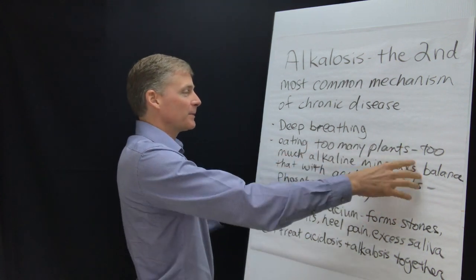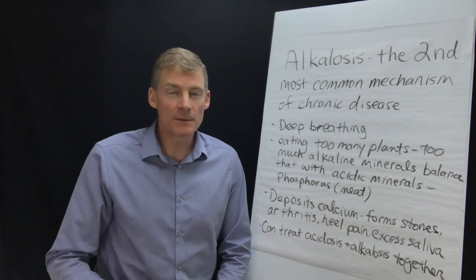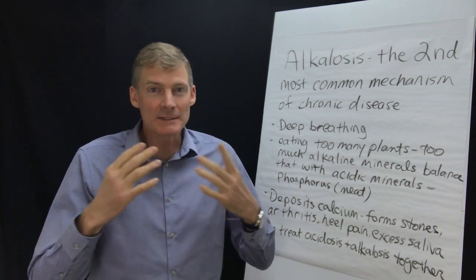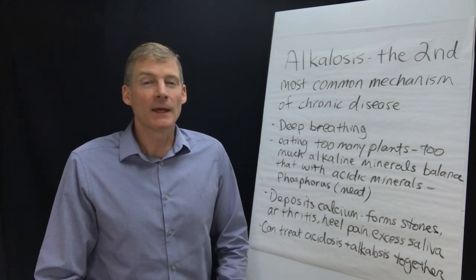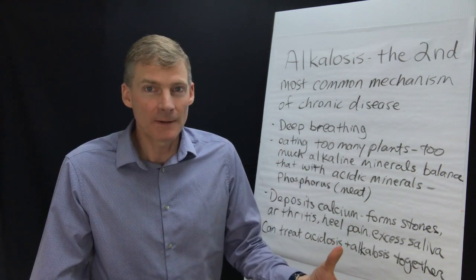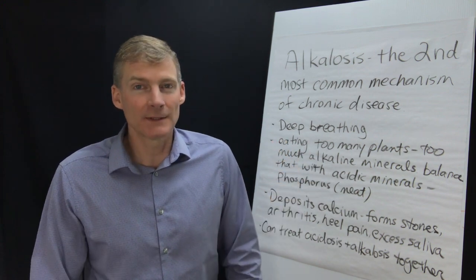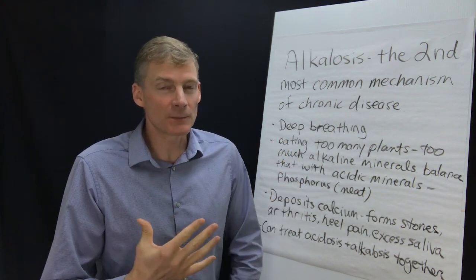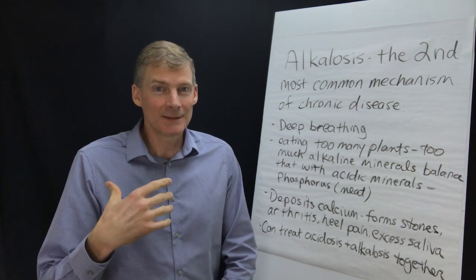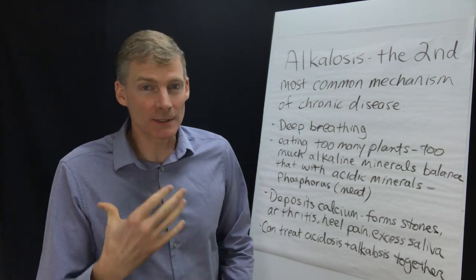And I wrote that here, eating too many plants, too much alkaline minerals, balance that with acidic minerals like phosphorus from meat. Now the most acidic food is grains. And in our United States we eat way too many grains and then we get way too acidic and that's the main mechanism of chronic disease being acidosis because of the grains. So that's why I've only purchased five loaves of bread in 17 years. I don't want to get the acid forming grains in my body plus there's other reasons.